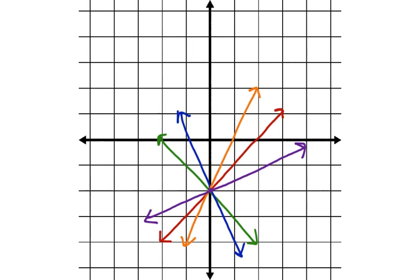Here is a family of lines where the y-intercept is the same. The slope of these lines are all going to be different, but the place where they all intersect the y-axis is the same. They intersect the y-axis at negative two. The y-intercept for all of these lines is negative two.